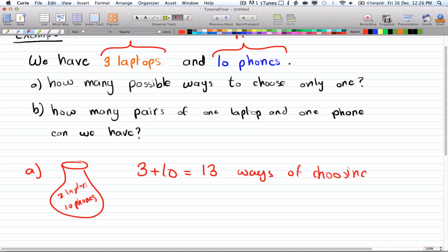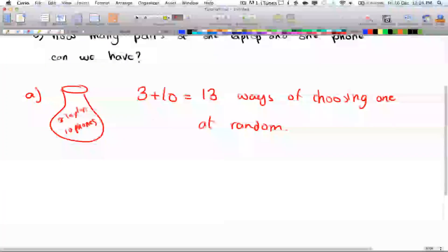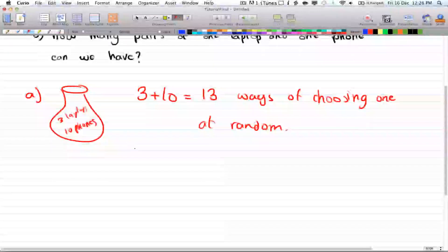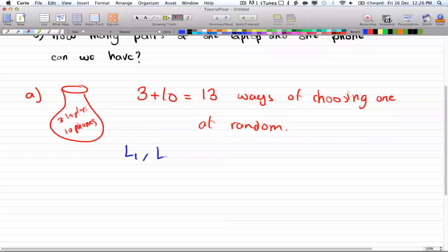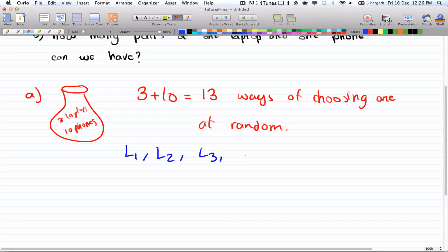If you think about it, you can actually say if you put your hand in once you can get laptop one or laptop two or laptop three or phone one or phone two all the way till phone ten, and this will add up to thirteen numbers.